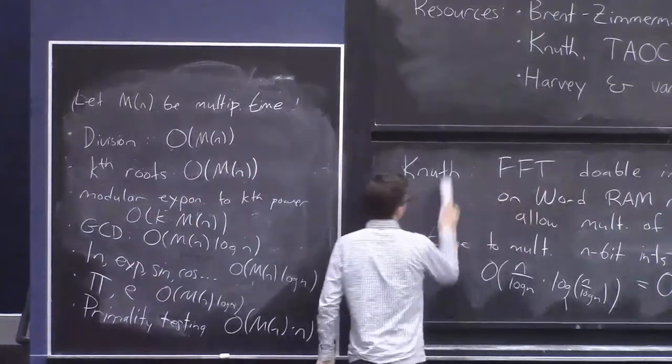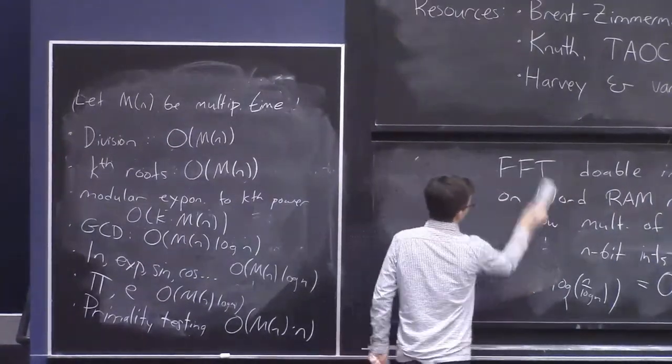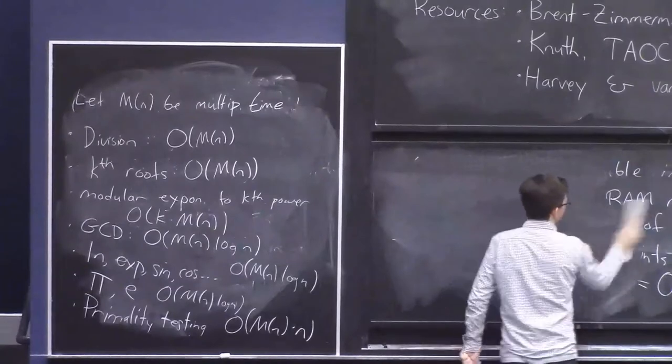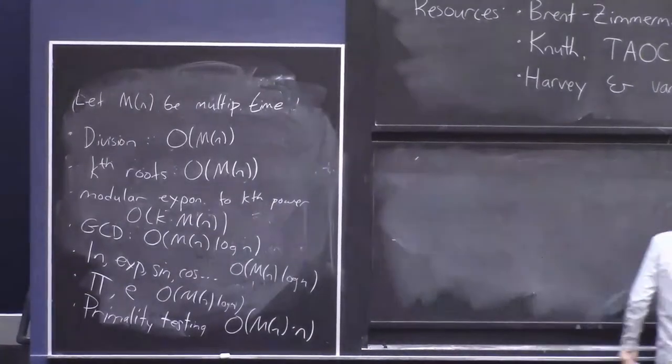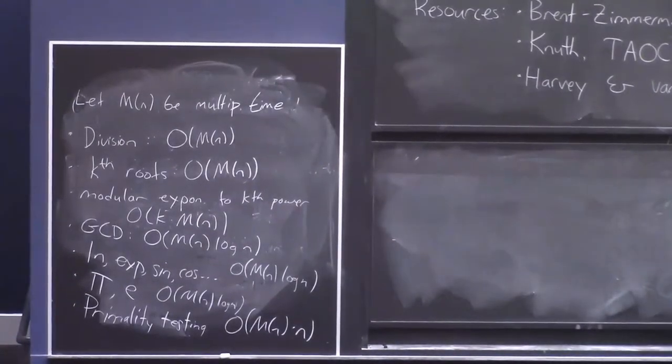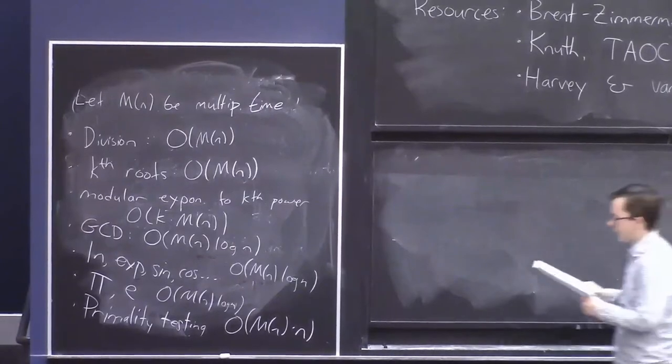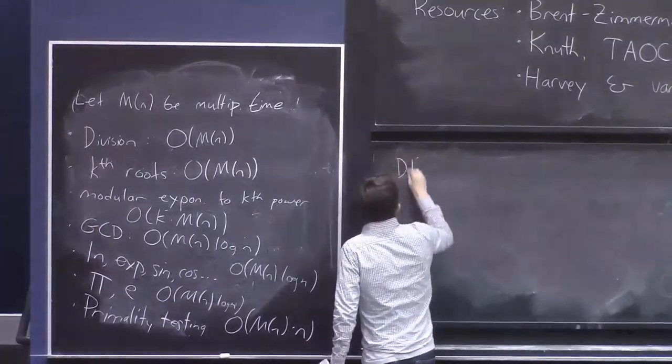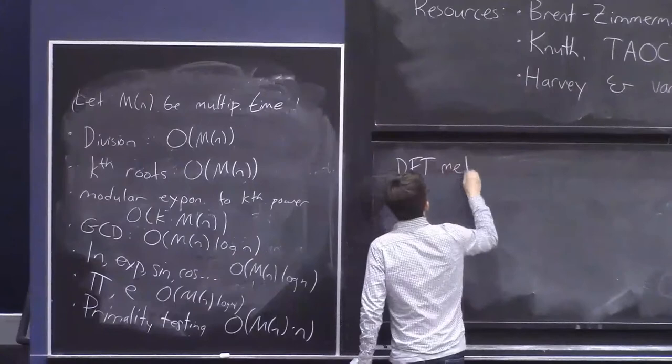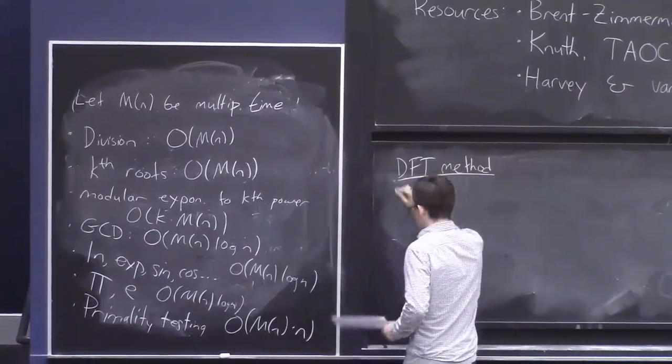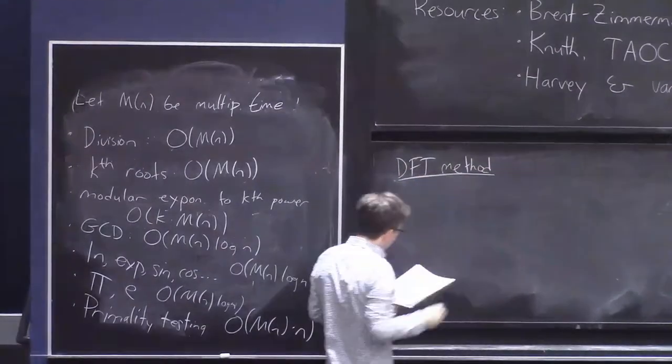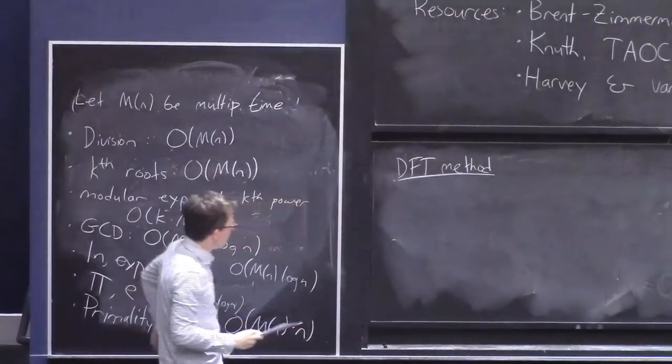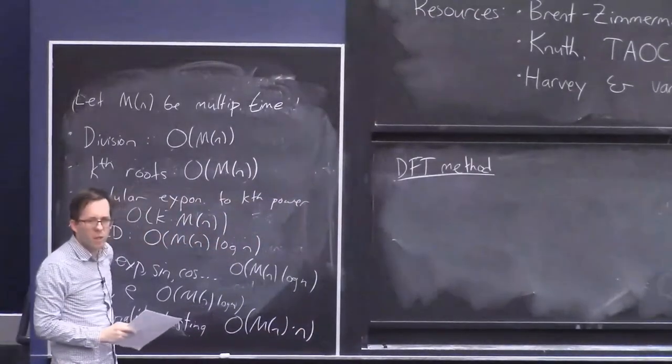So let me now tell you about this discrete Fourier transform method for multiplying integers. And the idea is that multiplying integers is basically the same problem as multiplying polynomials.